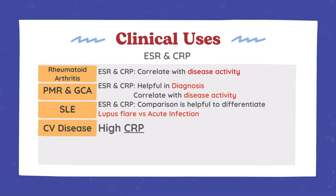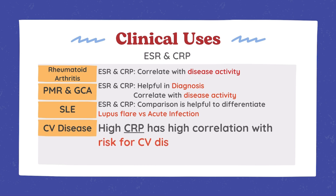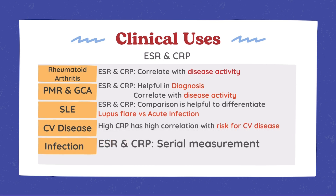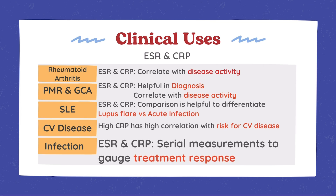High CRP correlates with risk for cardiovascular disease. Five, chronic infections — ESR and CRP monitor treatment response in conditions like osteomyelitis. Both markers are also used for prognosis. Elevated ESR and CRP suggest a poor outlook in conditions like diabetes, peripheral vascular disease, uremia, and ischemic stroke.